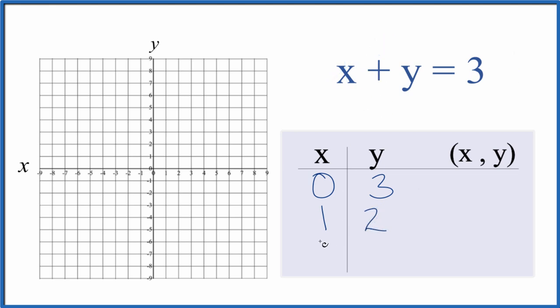Let's just choose 2 as our next number. If x is 2, then 2 plus y equals 3. So let's subtract 2 from each side. So y equals 3 minus 2. Y equals 1.